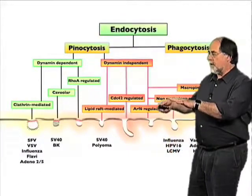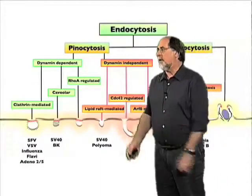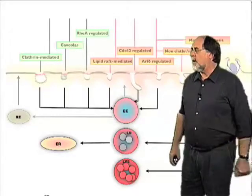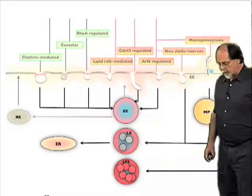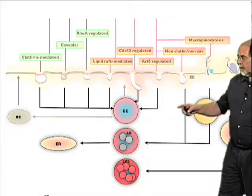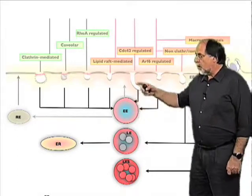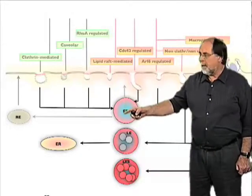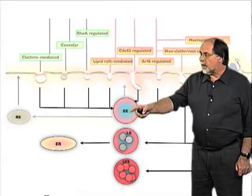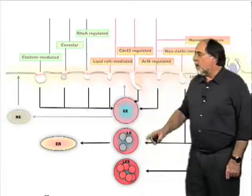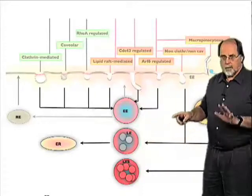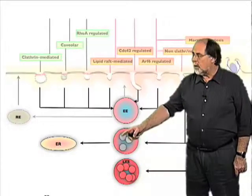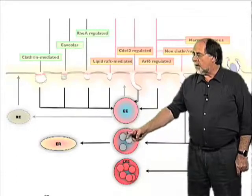Moving from the cell surface and the formation of primary endocytic vesicles downwards into the cell, there is a maze of organelles involved, the main ones shown on this schematic. The most important are the classical early endosomes — almost all pathways lead to transport of cargo into early endosomes. Material can then either return to the cell surface through recycling endosomes or continue to other destinations. This is rather simplified.